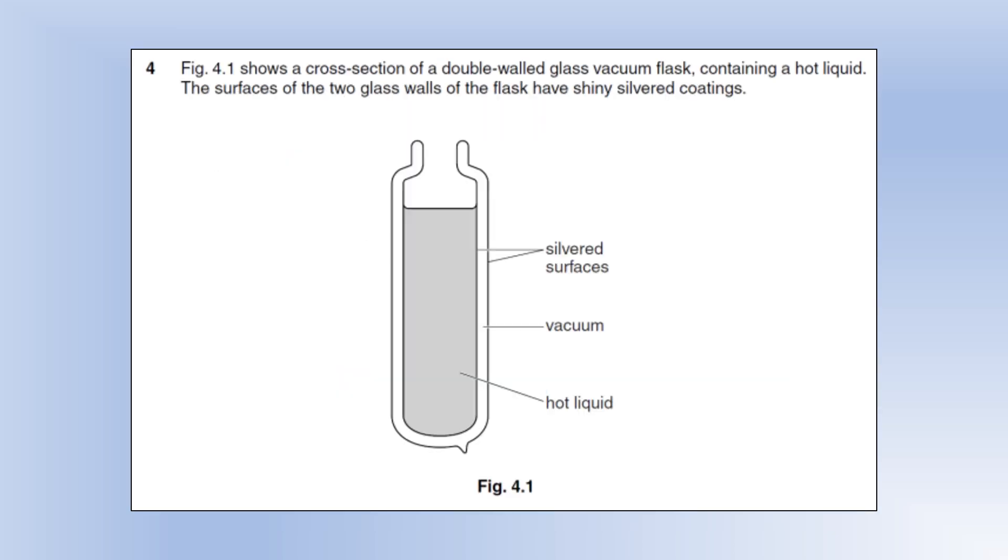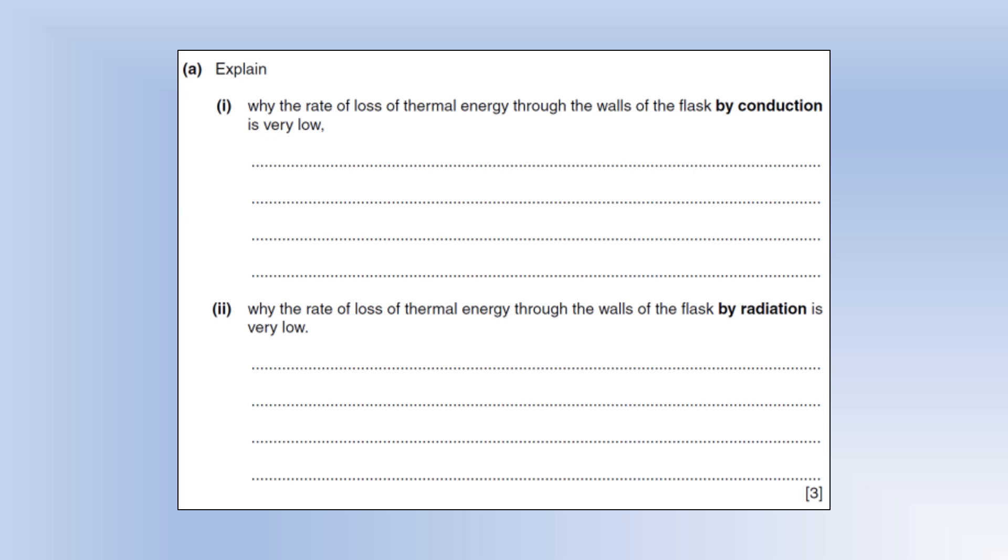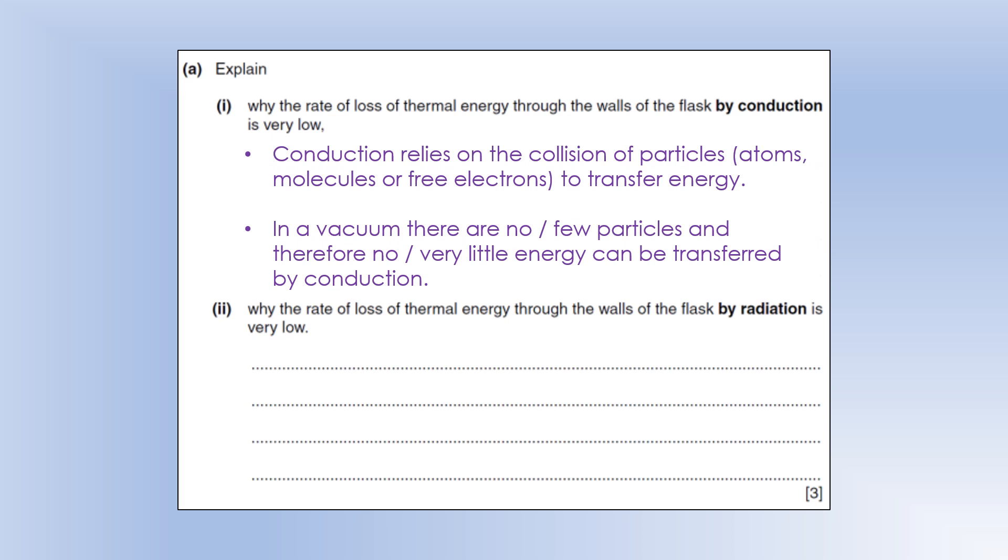Okay, so we've got a cross section of a double-walled glass vacuum flask. It's got a hot liquid inside it, and we've got two surfaces which have been silvered, but we can see it's open at the top currently. Okay, so explain why the rate of loss of thermal energy through the walls of the flask by conduction is very low. So conduction relies on the collision of particles. That can be atoms, molecules, or if they're a good conductor, that's going to be free electrons. And that's what moves energy around or through the material. So if you have a vacuum, a perfect vacuum has no particles. Most vacuums have some, but relatively few. And because there's few particles, there's very little energy transfer, so the rate of energy transfer is very low.